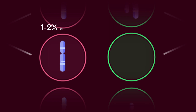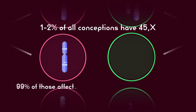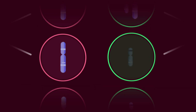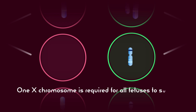Research has shown that 1–2% of all conceptions have the karyotype of 45X, but 99% of those affected babies are miscarried or stillborn. Furthermore, there is no Y equivalent to Turner Syndrome, where a fetus would develop with only a Y chromosome. At least one X chromosome is required for all fetuses to survive.